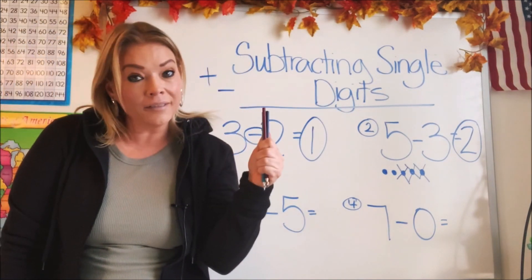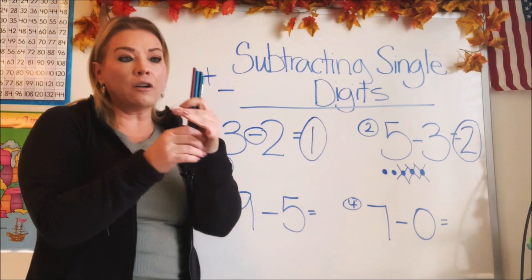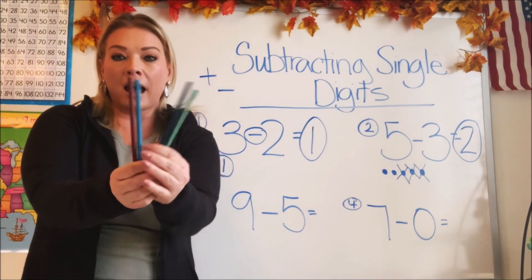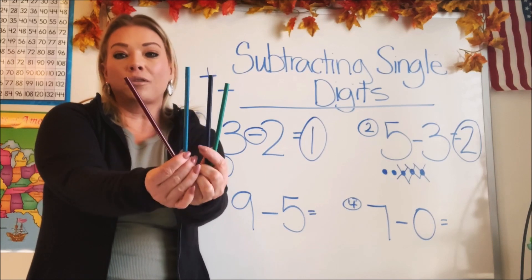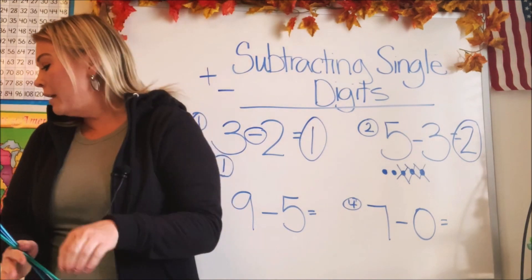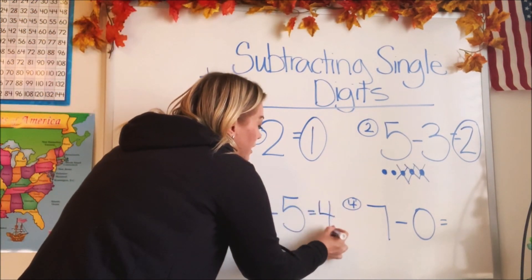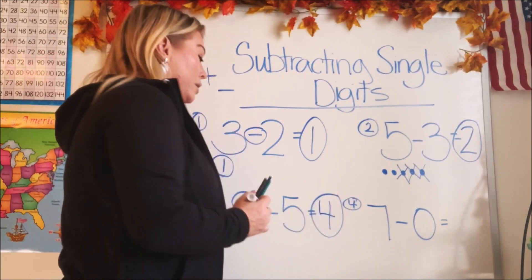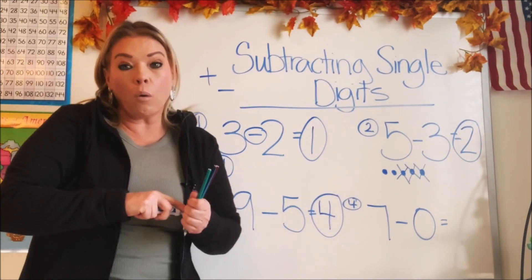Now whatever's left is our answer, right? Let's see what we got. Can you count how many we have there? We have one, two, three, four. We have four. So four is our answer. So let's write that down and we'll circle it so we know. So nine subtract five is four, isn't it?